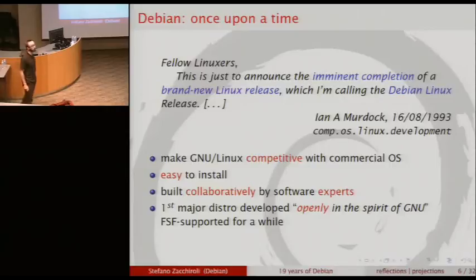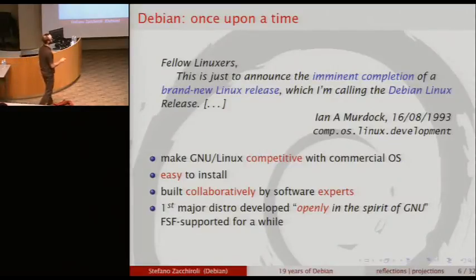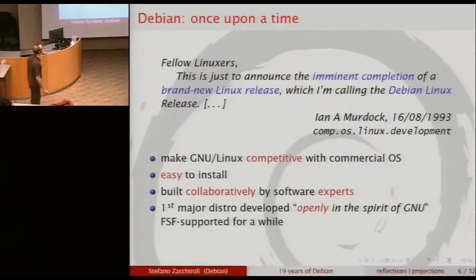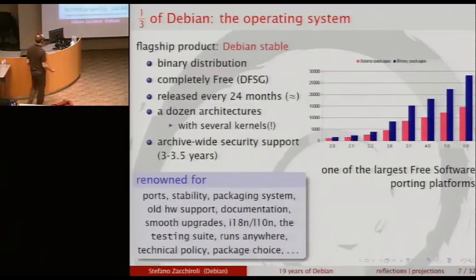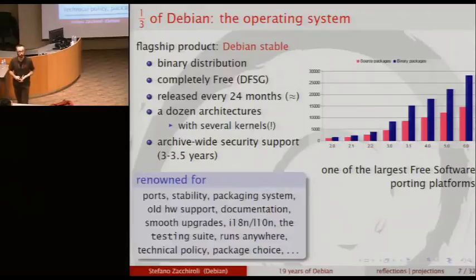Debian was also supported in its beginnings by the Free Software Foundation. On the 16th of August 1993, a message was posted to a newsgroup — the massive communication method of that time — announcing the creation of this system. So, what is Debian? It's three things at a time: it's an operating system, something technical you can install on your machine; it's a project, a group of people with specific goals; and it is a community.